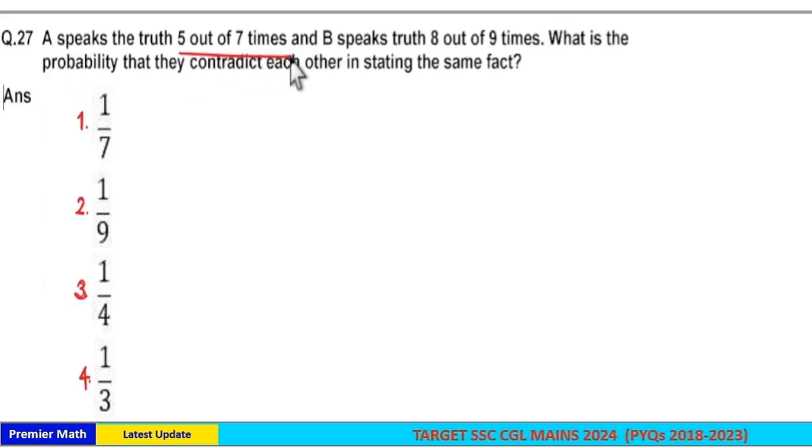A speaks the truth 5 out of 7 times and B speaks the truth 8 out of 9 times. What is the probability that they contradict each other in stating the same fact?